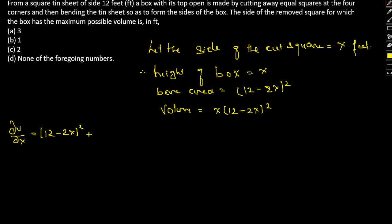(12 - 2x)² + 2x(12 - 2x)(-2) = 0, so x = 6 or 12 minus